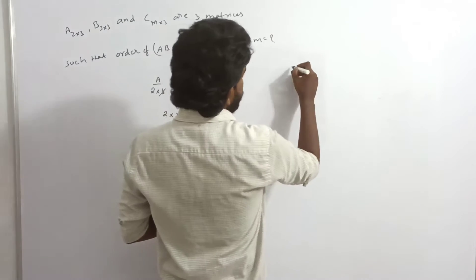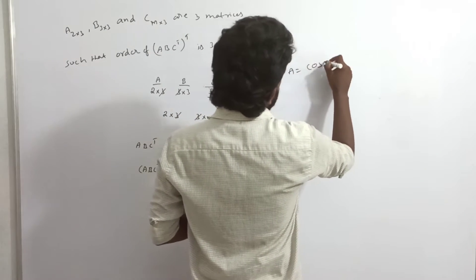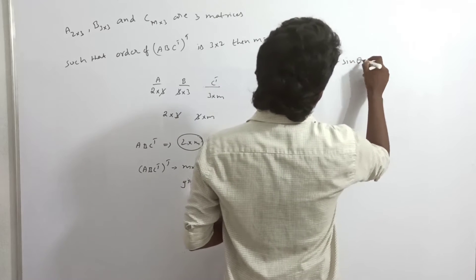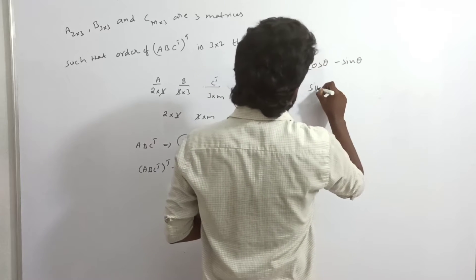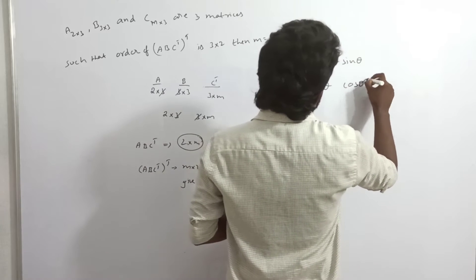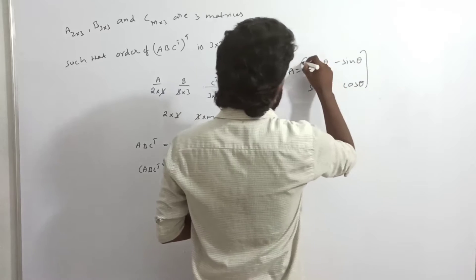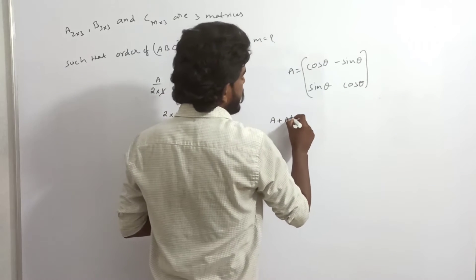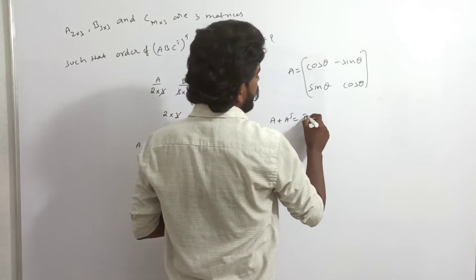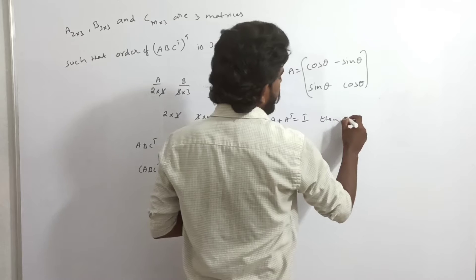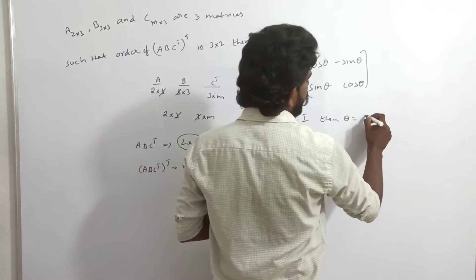Next question: A equals cosine theta, minus sine theta; sine theta, cosine theta. If A plus A transpose equals I, then find theta.